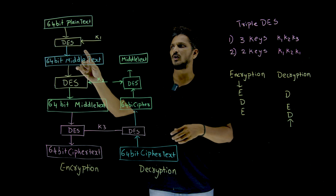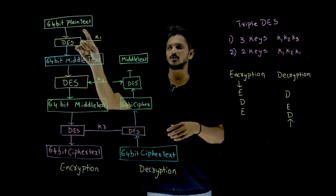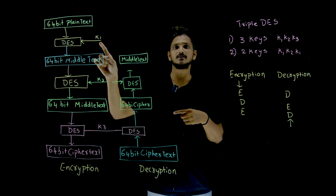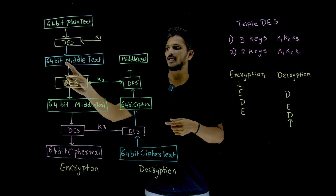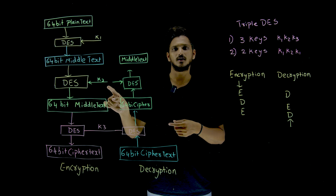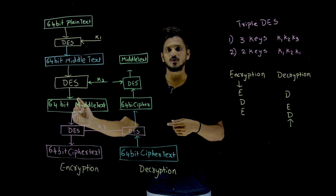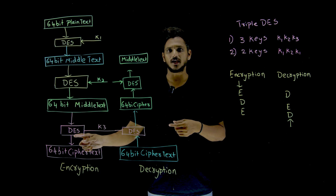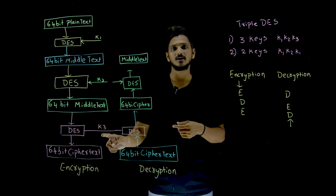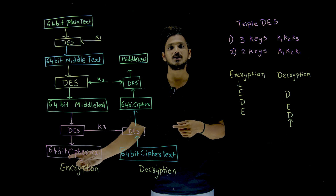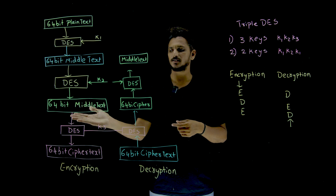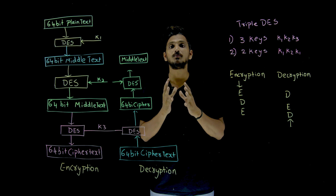In Double DES, 64-bit plain text is moved into the DES — 16 rounds happen. The key used is K1, and we get a 64-bit middle text. This is sent into DES again with K2 as the key, and we get another middle text. That is sent into DES again with K3 as the key, and finally we get 64-bit cipher text. In Double DES we had only two layers; here one more layer is added. This is what we call Triple DES.